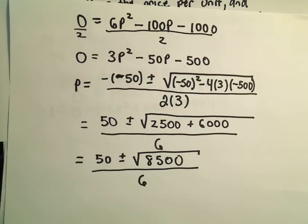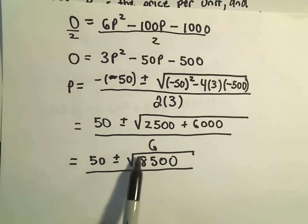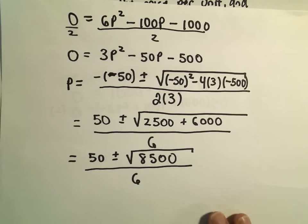Now notice we get two solutions. We would get 50 plus the square root over 6, we would get 50 minus the square root of 8,500 over 6.